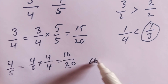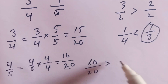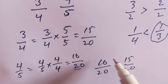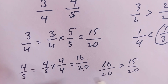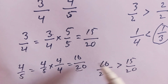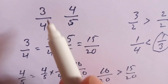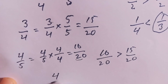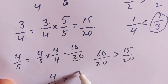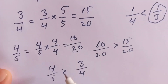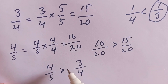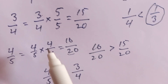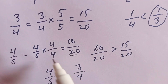We can say that 16 over 20 is greater than 15 over 20. 16 over 20 comes from 4 over 5 and 15 over 20 comes from 3 over 4. So we write that 4 over 5 is greater than 3 over 4. We concluded that 4 over 5 is greater than 3 over 4 by making equivalent fractions.